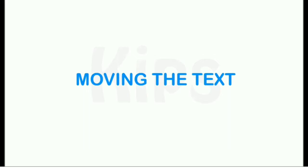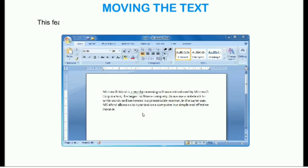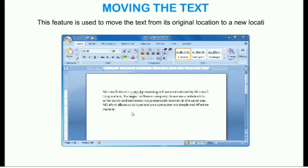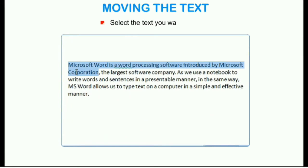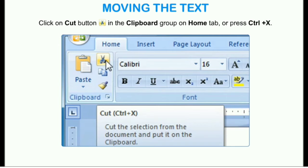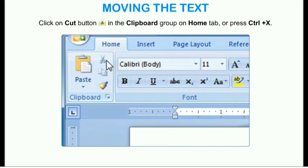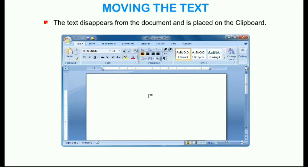Now let us learn about moving the text. This feature is used to move the text from its original location to a new location. Select the text you want to move, then click on the Cut button in the clipboard group on the Home tab, or press Ctrl+X. The text disappears from the document and is placed on the clipboard.